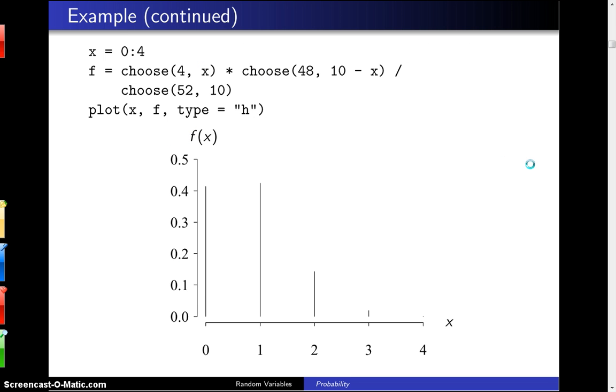Now on the next page, if you want to plot that probability mass function, this is our code. We set the vector x to 0 through 4, those are the support values. Then we have 4 choose x times 48 choose 10 minus x up top divided by 52 choose 10. This time we're using the choose function here rather than writing them out as factorials.